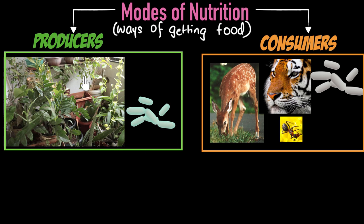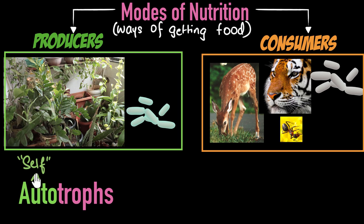The technical name or biological name of producers is autotrophs. The word auto means self and trophs means nourish. So this means they can self-nourish. They can make their own food, they can feed themselves.